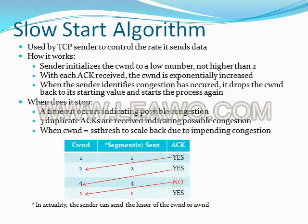The first algorithm is the slow start algorithm, used by the TCP sender to control the rate at which it sends data. It starts with the sender initializing the congestion window variable to a low number — no higher than two. With each acknowledgement received, it increases the congestion window exponentially. When the sender identifies that congestion has occurred, it drops the congestion window back to its starting value and starts the process again. The initial congestion window variable is set to one; it sends one segment and receives an acknowledgement.